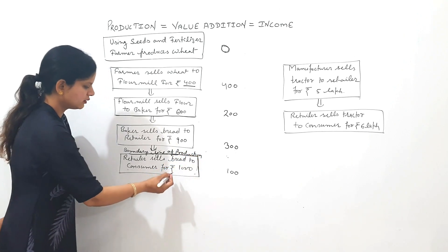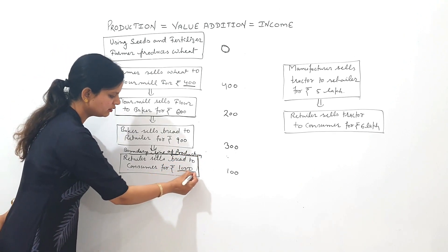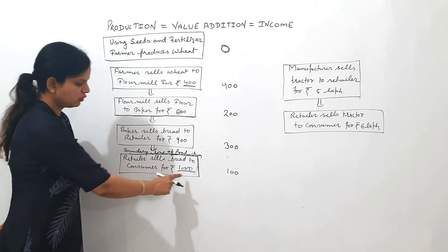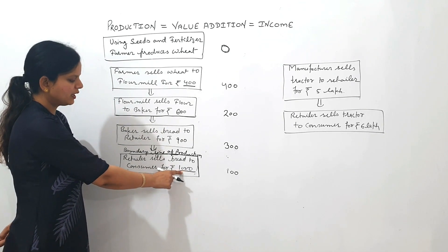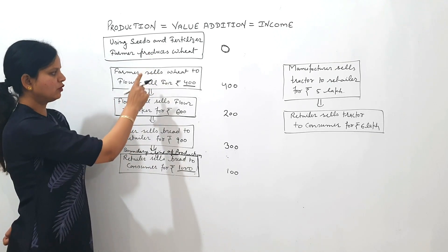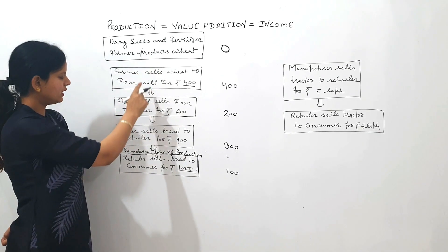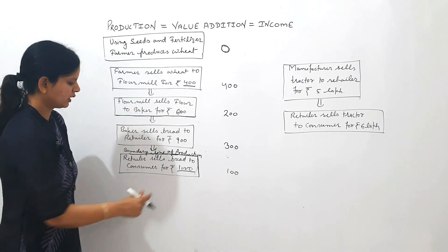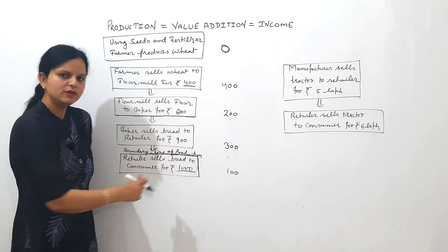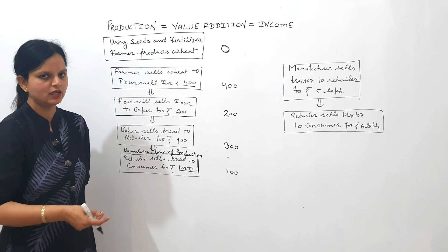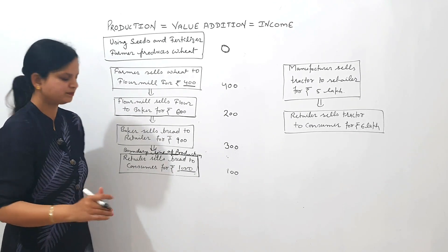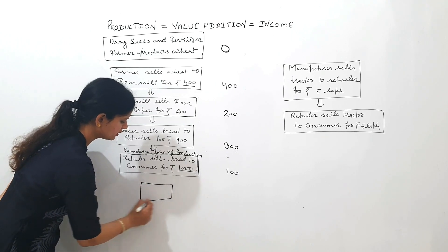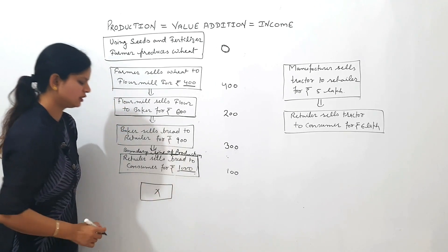This good will be included in final goods and will be included in GDP, because its value includes the value of wheat, the value of services of the flour mill, the value of services of the baker, and the value of services of the retailer. This good will finally be consumed by the consumer and will not be resold — there will be no further value addition.